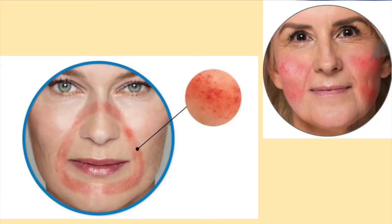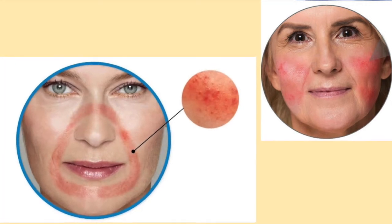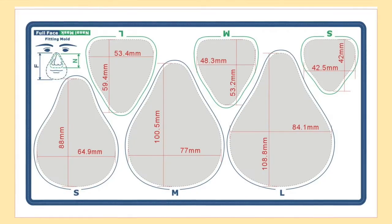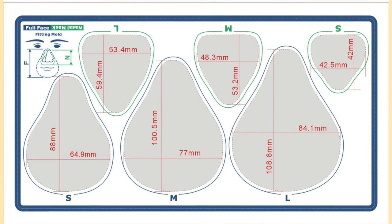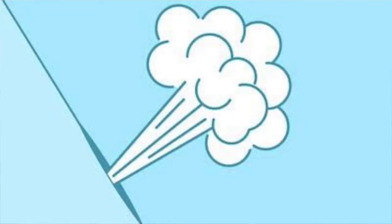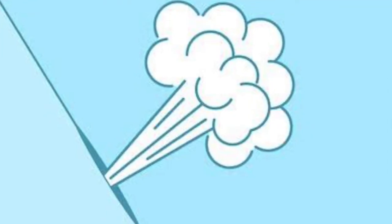The mask used for non-invasive ventilation can be extremely irritating to the face. The face mask can rub and break down the skin, which can also develop a rash and become very tender. Although non-invasive ventilation masks come in several different sizes, finding the right size may be challenging. Having the wrong size mask will cause rubbing and allow air to leak out.